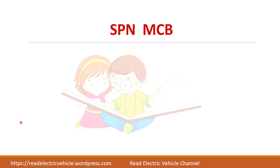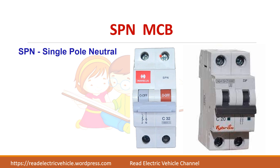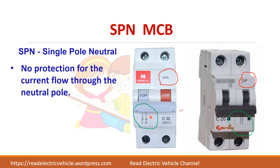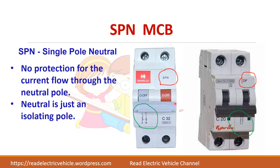There is one more type called SPN MCB, where SPN stands for single pole with neutral. Like DP, it also has two poles and connects one live wire and one neutral wire. The major difference is that in SPN, the neutral is not protected — it acts only as an isolating pole. In a DP MCB, whatever is connected on both terminals is protected, including the current through the neutral.